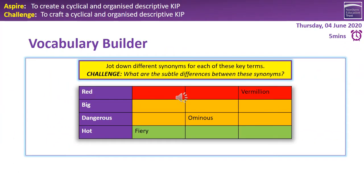What I'd like you to do first of all is have a little look at the grid and think of some different synonyms for each of the key terms which are in the purple column. I've already got you started on a couple of them, and I want you to think about those subtle differences between those synonyms and how we can develop your vocabulary. I'm going to give you between about 3 to 5 minutes, so have a look on your knowledge retrieval sheet for some information. However, if you've also got a thesaurus or you can go online, you'll also get a variety of vocabulary there. Off you go.